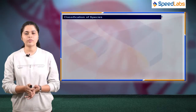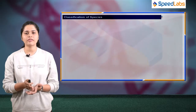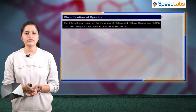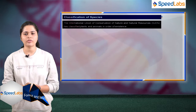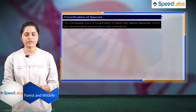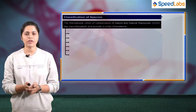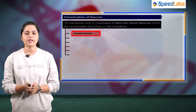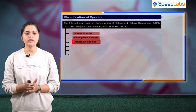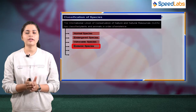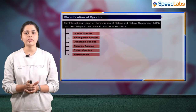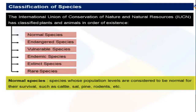Now, how do we classify our species? The International Union of Conservation of Nature and Natural Resources, i.e. IUCN, has classified species into 6 types: normal species, endangered species, vulnerable species, endemic species, extinct species, and rare species.